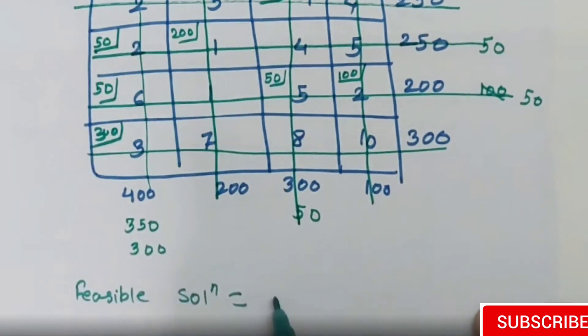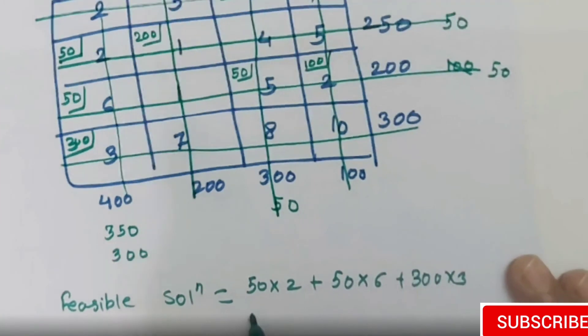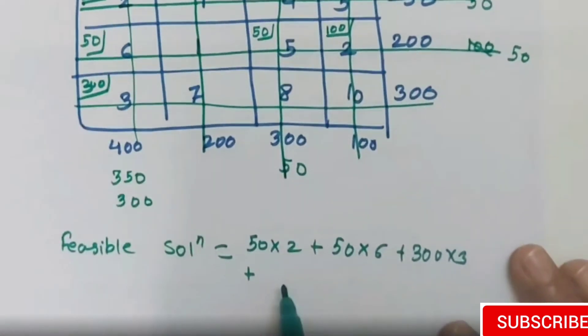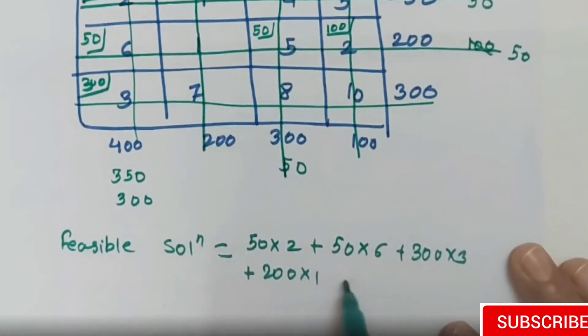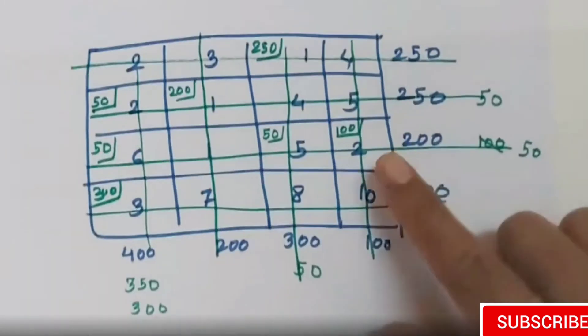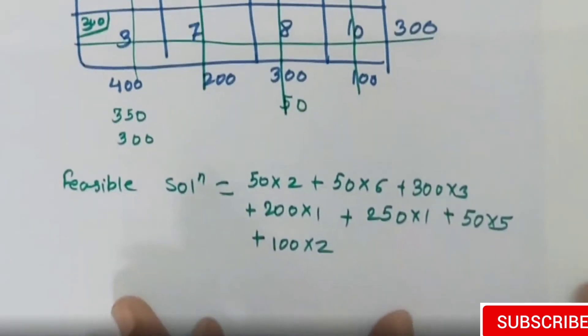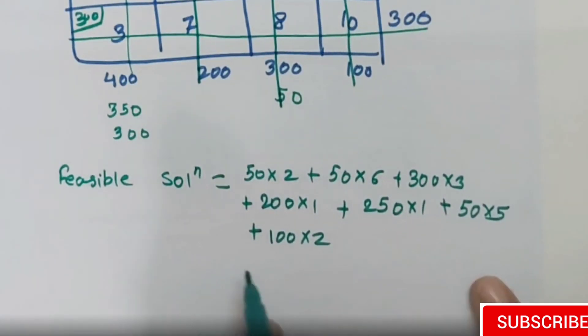To find the feasible solution, the whole process is the same. The feasible solution is the product of these assigned numbers: 50×2 + 50×6 + 300×3 + 200×1 + 250×1 + 50×5 + 100×2. Write all corresponding assignments and find the summation of their products.